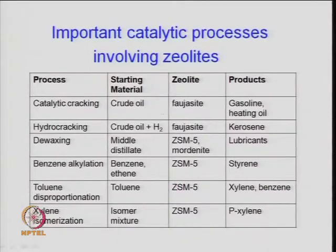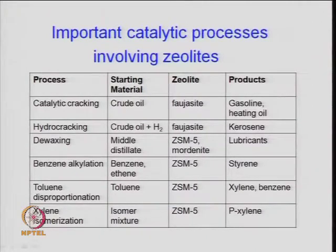Various types of zeolites have been used in process catalytic cracking — say crude oil with faujasite-type zeolites — and the products are gasoline and heating oil by cracking. We will continue next time.